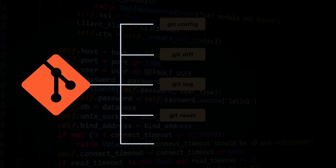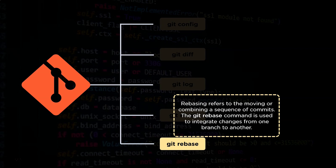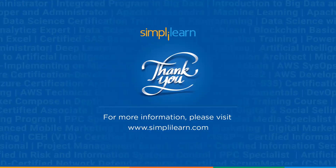The last command we will see today is the git rebase command. The term rebasing refers to moving or combining a sequence of commits. The git rebase command is used to integrate changes from one branch to another. And so with this, we have come to the end of this session. I hope you found it informative and helpful. Thanks for watching and stay tuned for more from Simply Learn.